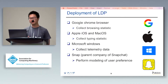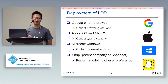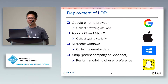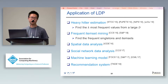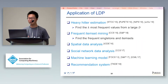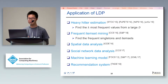Recently, LDP has been deployed by many famous companies such as Google, Apple, Microsoft, and Snap. Also, LDP has been studied in many well-known algorithms such as heavy hitter estimation, frequent item set mining, spatial data analysis, social network data analysis, machine learning models, and recommendation system algorithms.